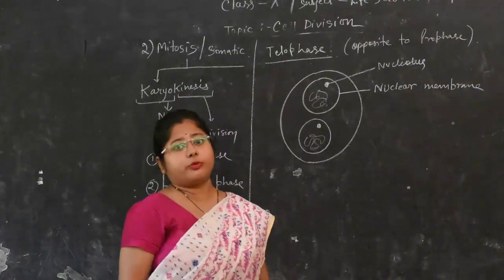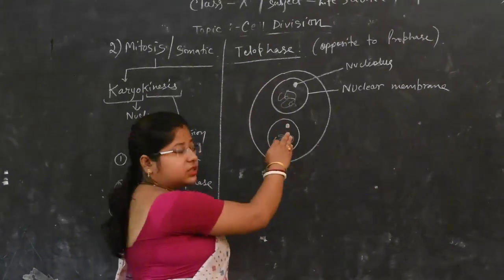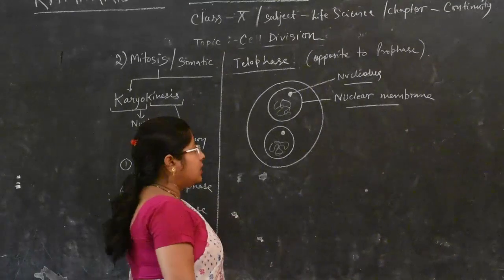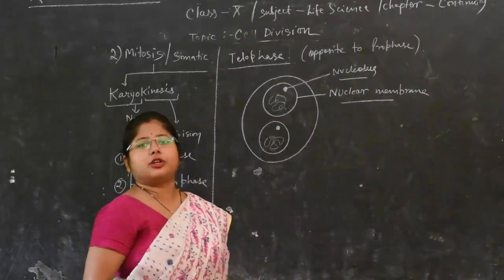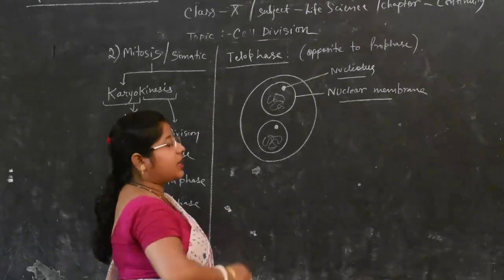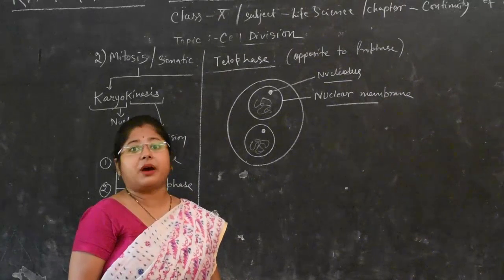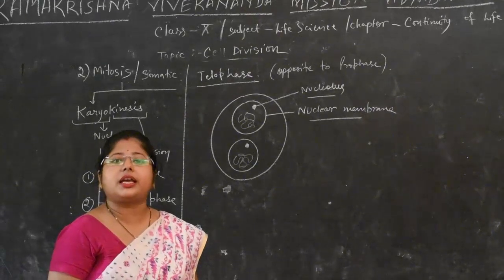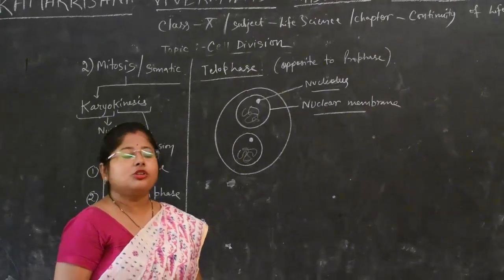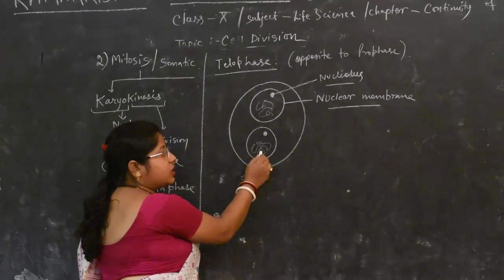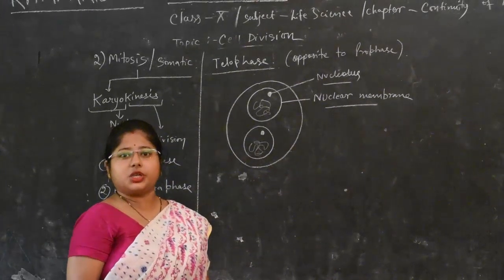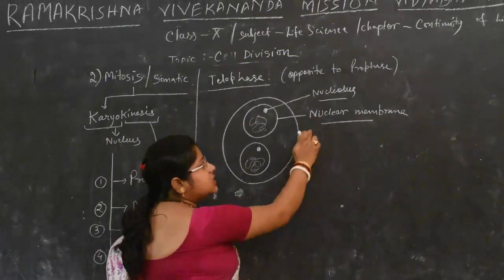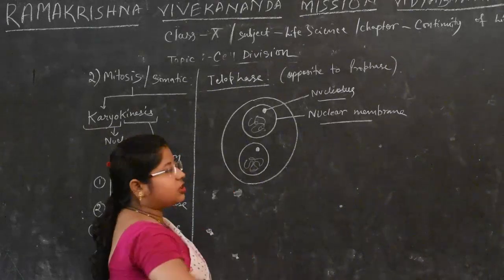Telophase is just the opposite of Prophase. There is reappearance of the nucleolus and nuclear membrane. In Prophase we had condensation of chromosomes, but here we have decondensation followed by despiralization, transforming the chromosome structure back into chromatin reticulum — interwoven thread-like structures. The nucleolus and nuclear membrane reappear, and this ends Telophase.